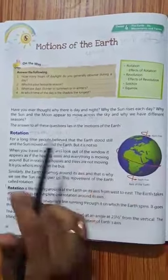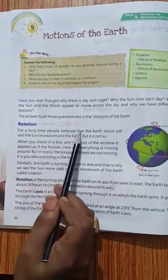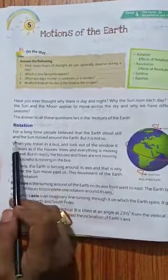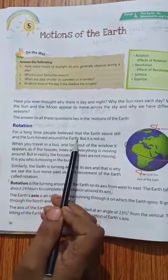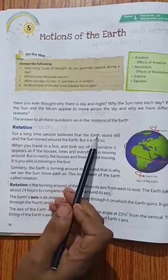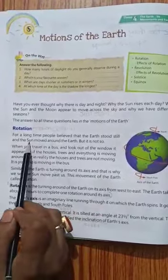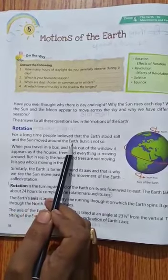Rotation means chakkar lagana. For a long time people believed that the earth stood still and sun moved around. Bohat pahle, joh log thay, unka belief tha ki earth joh hai, woh apni jaga pe still hai, chakkar lagata hai.